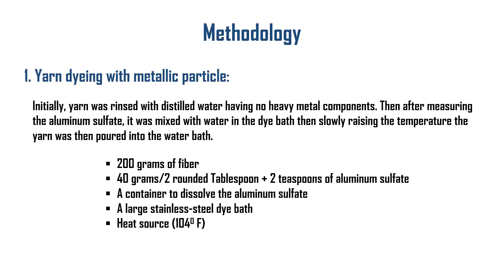Two grams of fiber was used, and 40 grams — approximately two tablespoons — of aluminum sulfate was mixed together. A stainless steel container was used to dissolve the aluminum sulfate. A large stainless steel dye bath was also used for dyeing, and the heat source temperature was 104 degrees Fahrenheit as previously explained.